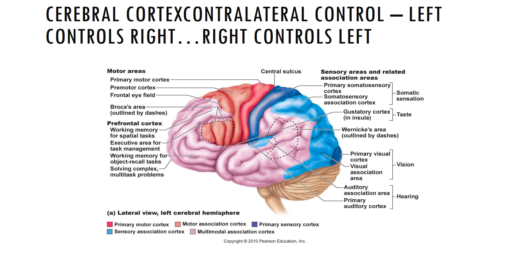Examining the sensory areas of the cerebral cortex, the somatosensory cortex is located in the parietal lobe. The primary somatosensory cortex is located in the postcentral gyrus, where neurons receive touch information like temperature, pressure, and pain from somatic sensory receptors of the skin and from proprioceptors in skeletal muscle. This area allows for spatial discrimination — interpreting what body region is being stimulated.